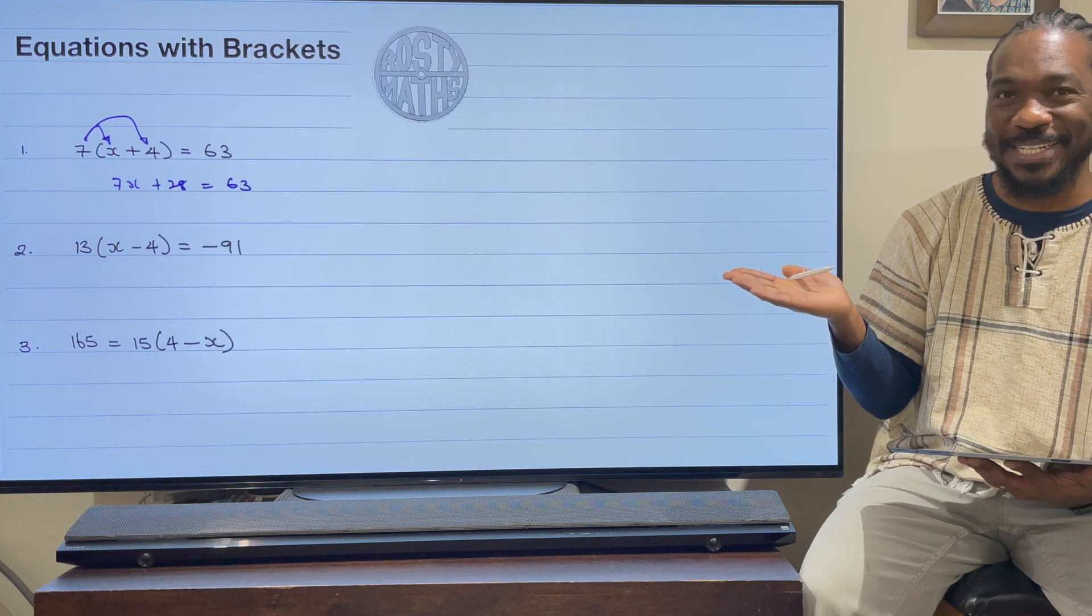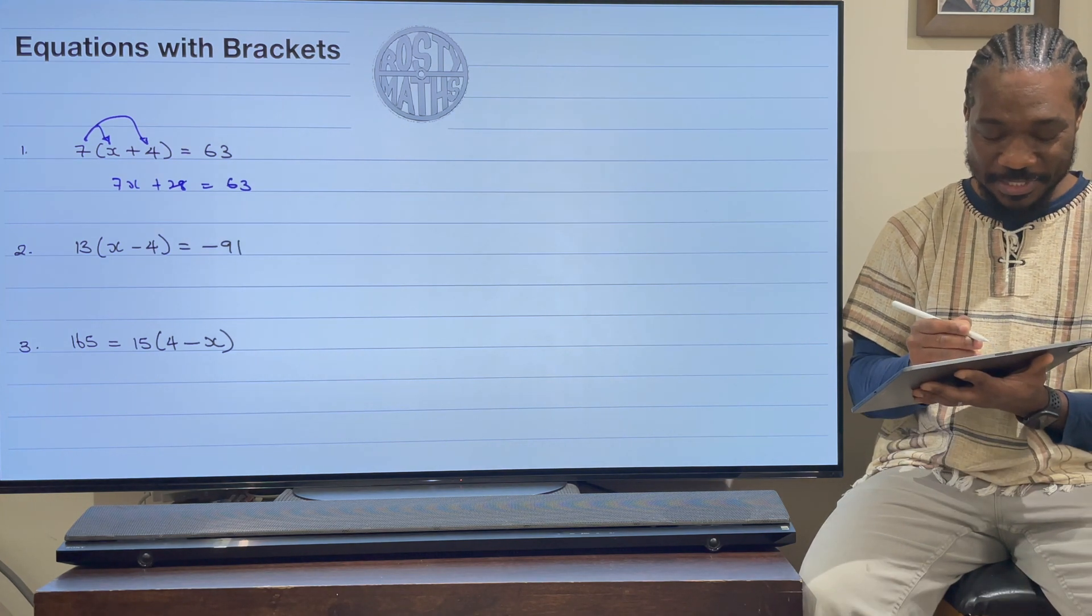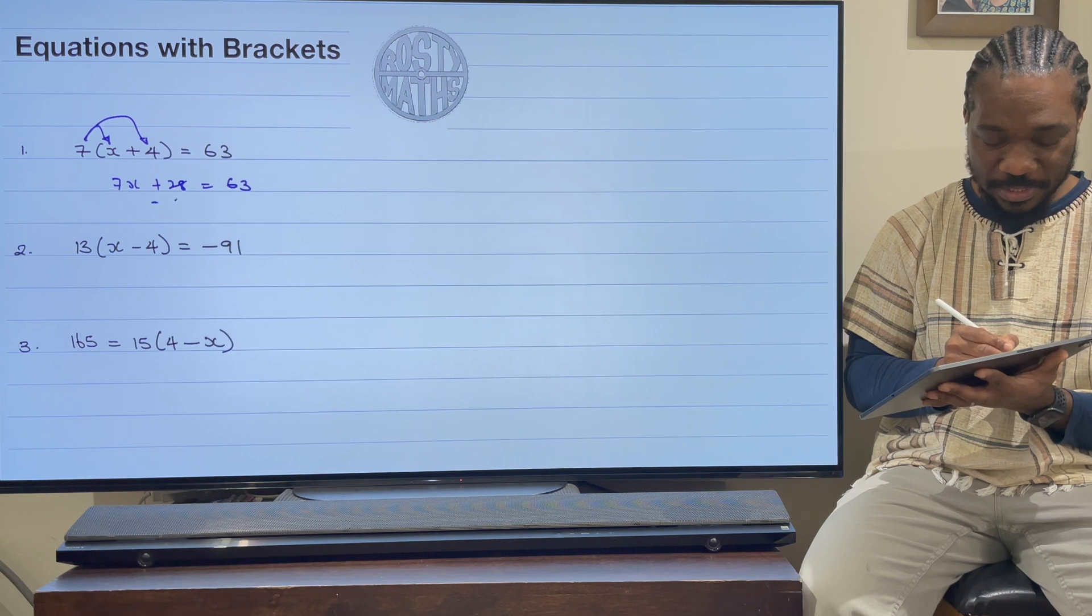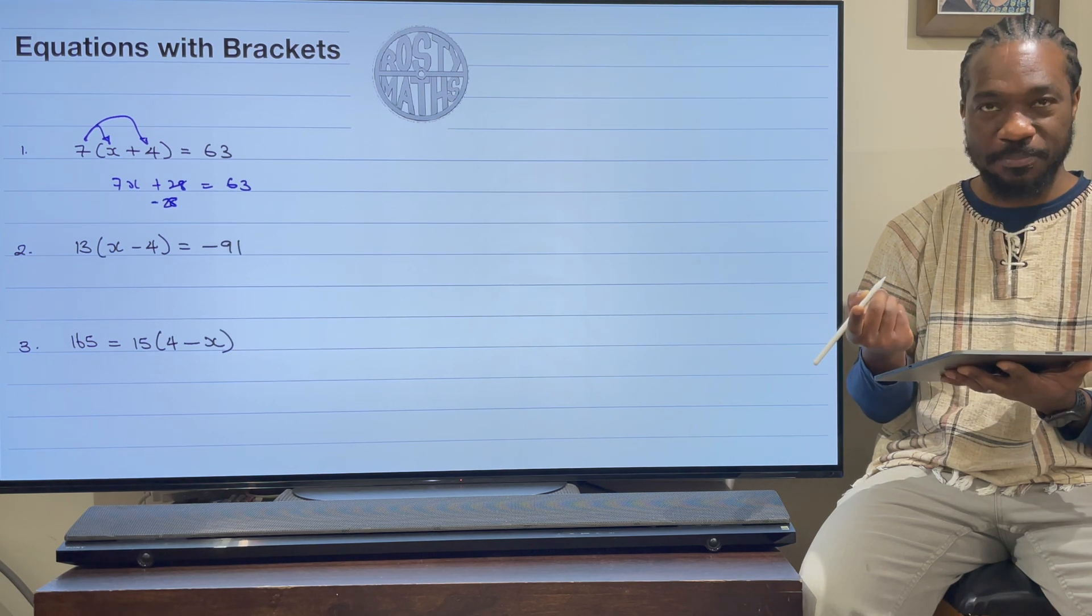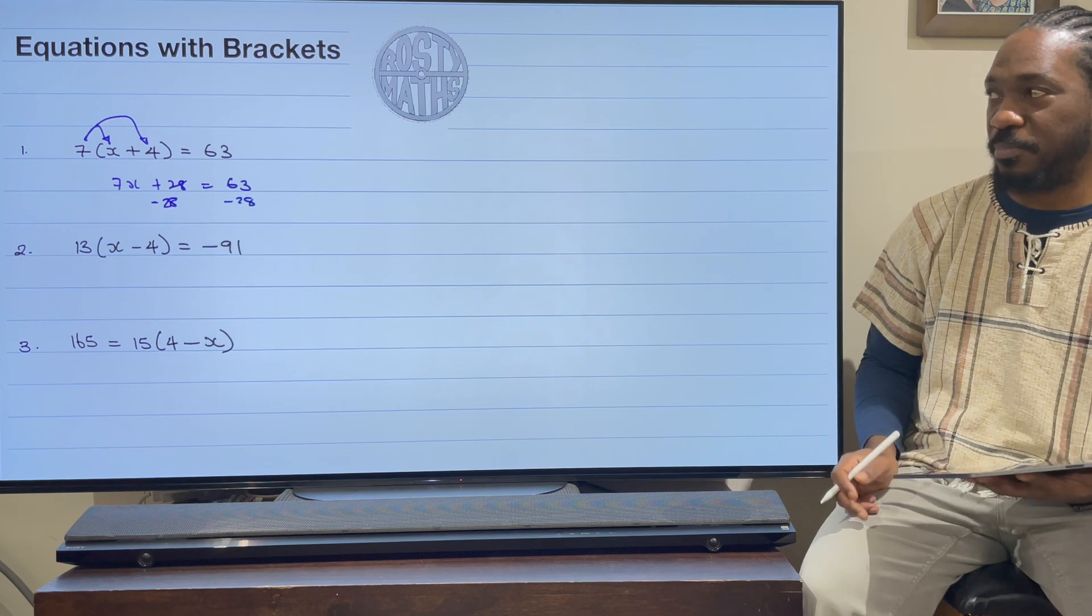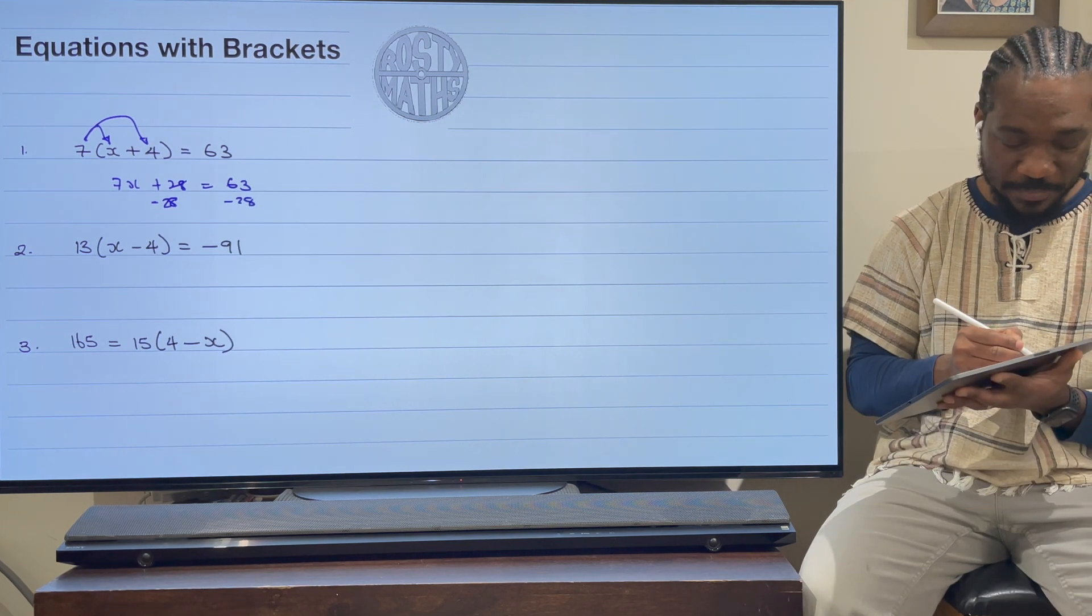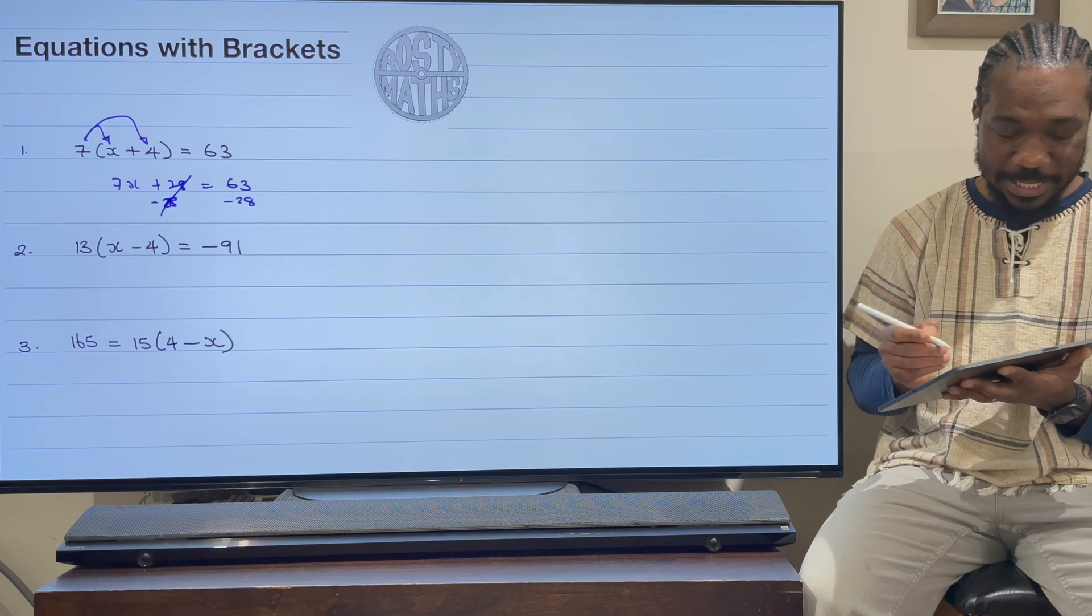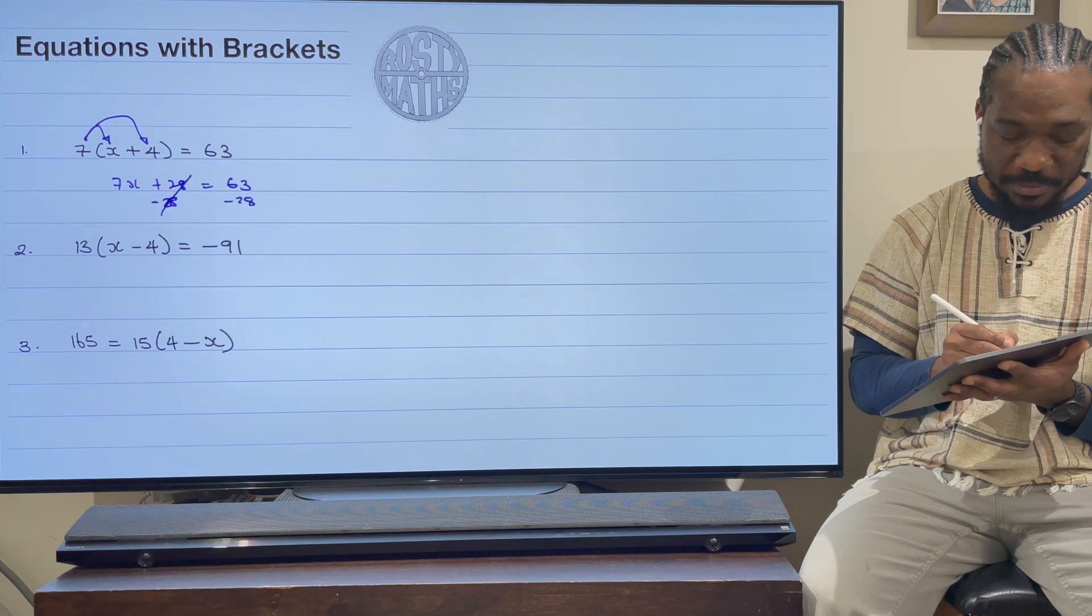And just like that, now it looks like what we have just been doing in the last video. So now this is really easy to solve. So the first thing we will do, we will take away 28. You know that I like the balancing method, so we're going to take away 28 from both sides because that makes life super easy.